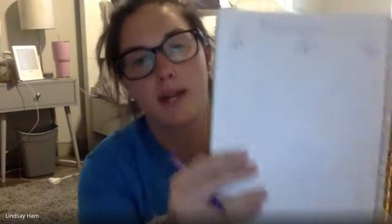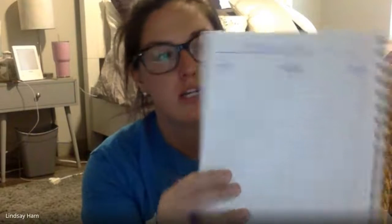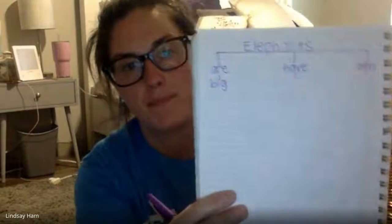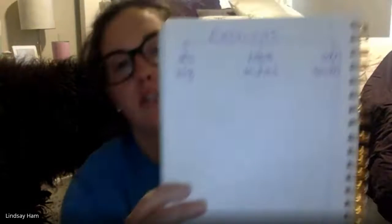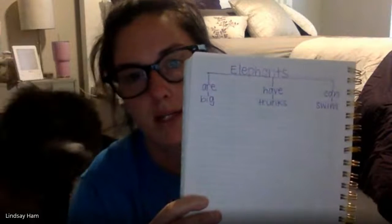And then I'll draw little lines underneath those three words and I'm ready to come up with the rest of the sentences. Elephants are — big. Elephants have — trunks. Elephants can — swim.